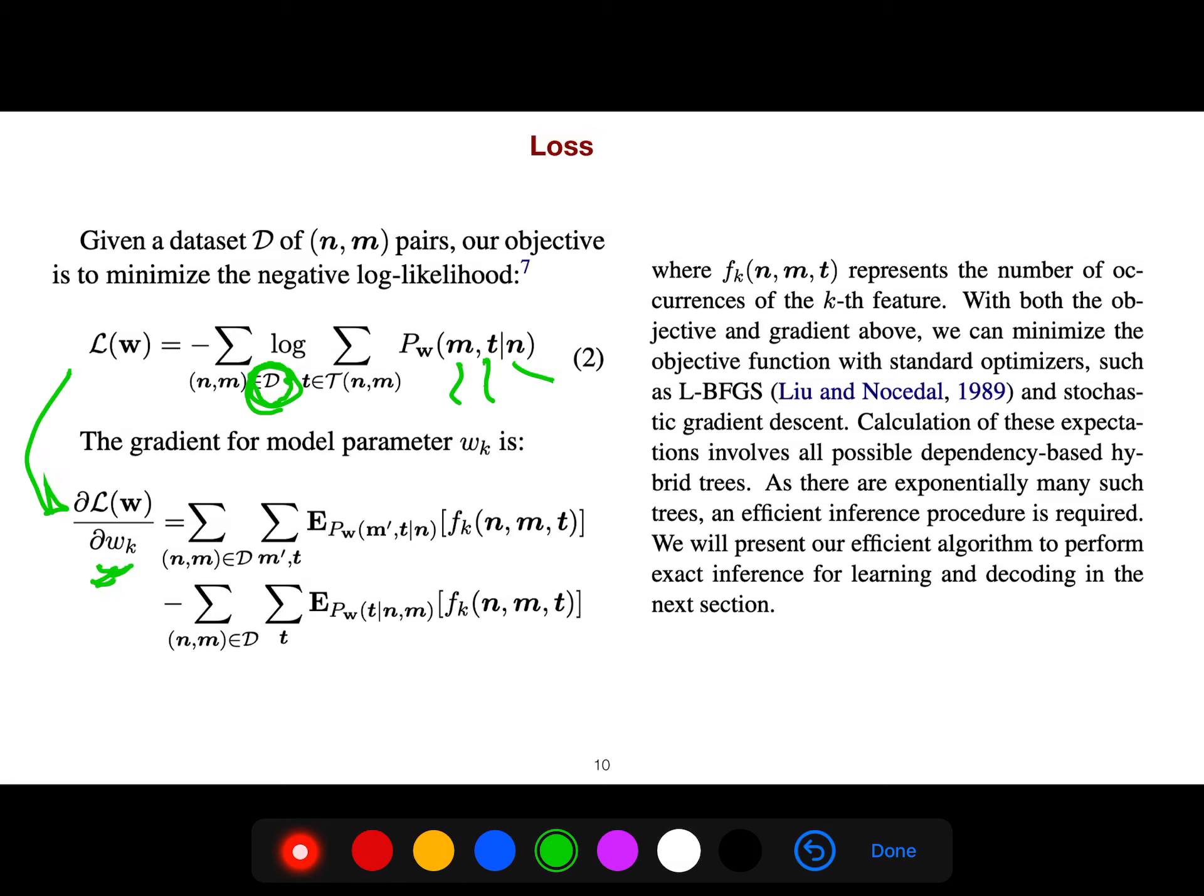We can minimize the objective function with standard optimizers like stochastic gradient descent.